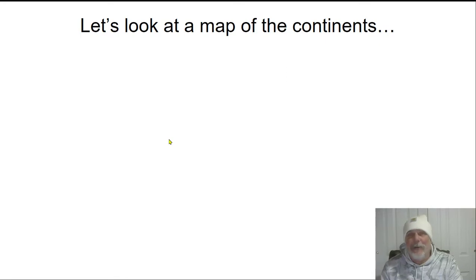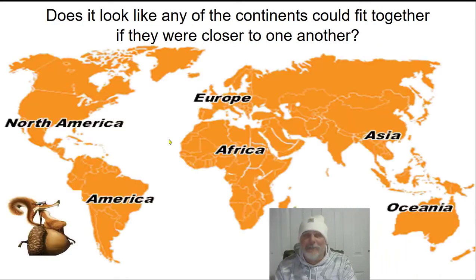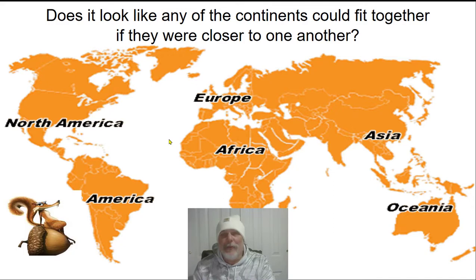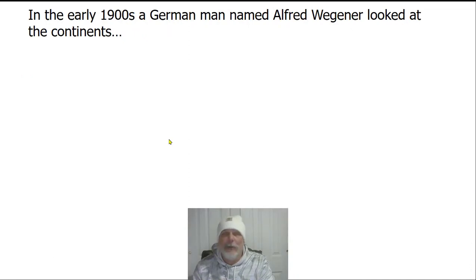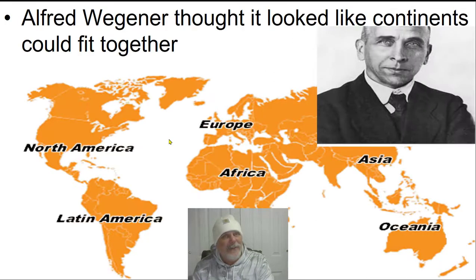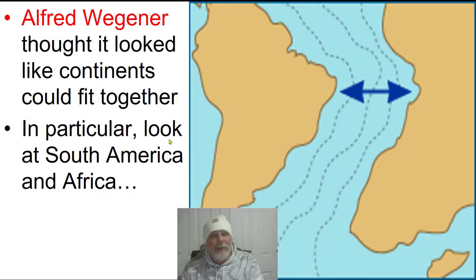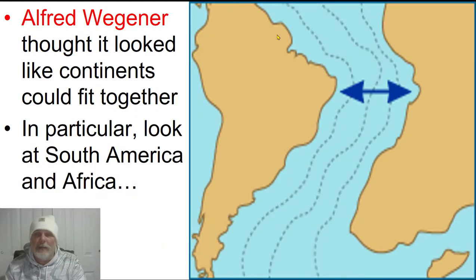Let's take a look at a map of the continents. Does it look like any of these continents could fit together if they were closer to one another? In the early 1900s, there was a German named Alfred Wegener. He looked at this map, kind of like you were doing today, and thought that it looked like some of these continents could fit together. In particular, let's take a look at South America and Africa — they look pretty similar, like two pieces that would fit together just like a jigsaw puzzle.